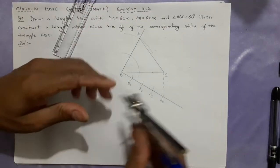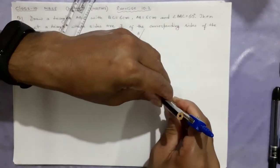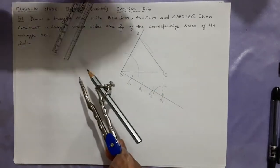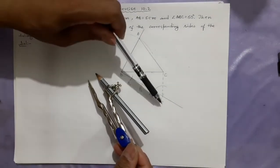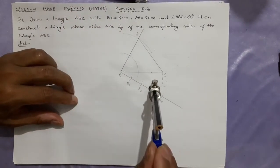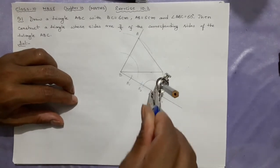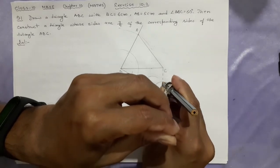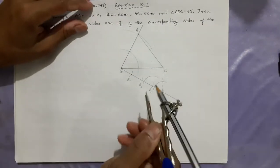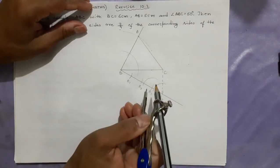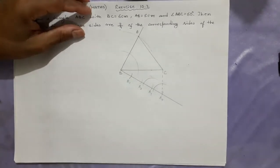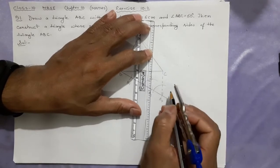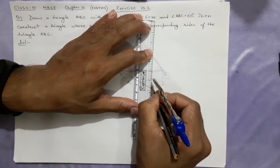Now we make the same angle. Take the same-sized arc at B3 — because here the numerator is 3. Place your compass at B3 and draw an arc. Measure the size of the angle from B4C, then take that same measurement and cut from B3. This line through the intersection will be parallel to B4C, giving you point C-dash.